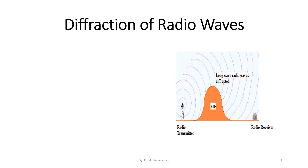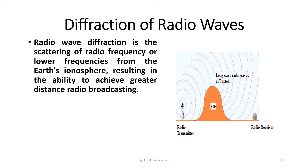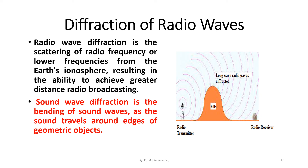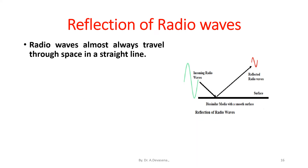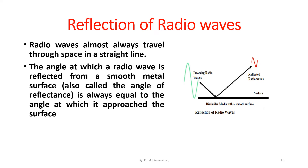Diffraction of radio waves: radio wave diffraction is the scattering of radio frequency or low wave frequencies from the earth's ionosphere, resulting in the ability to achieve greater distance radio broadcasting. Sound wave diffraction is the bending of sound waves as the sound travels around edges of geometric objects. Reflection of radio waves: radio waves almost always travel through space in a straight line. The angle at which a radio wave is reflected from a smooth metal surface — also called the angle of reflectance — is always equal to the angle at which it approached the surface.